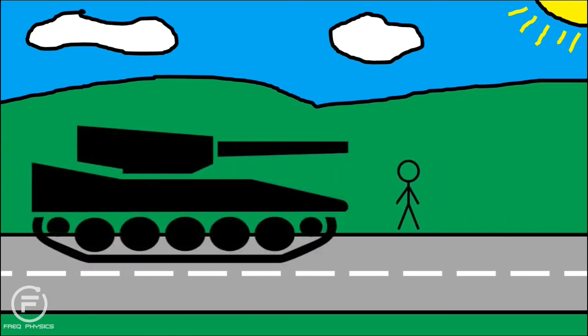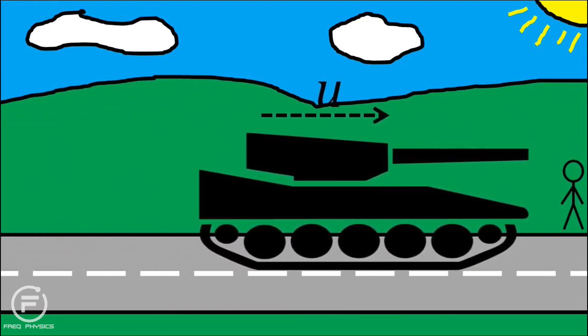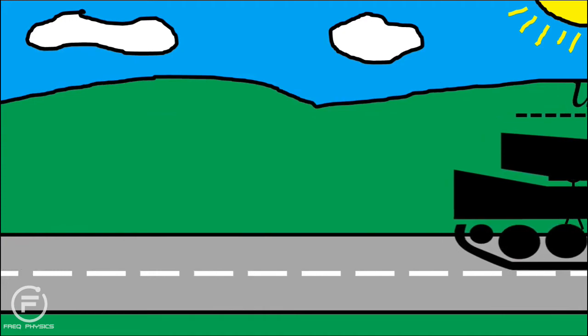Now suppose the tank fires a shell with velocity V relative to the tank. Of course, to someone standing by the road, the shell appears to have velocity U plus V. Keep this thought in mind.